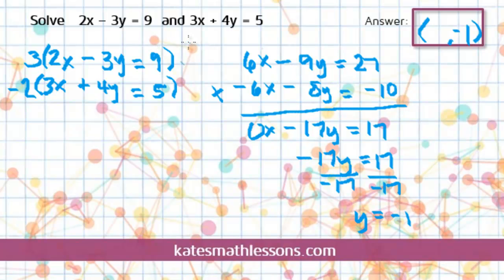When you go back to find the second variable, always go back to one of your original equations. It doesn't matter which one you pick. Pick whichever one looks easier. I'm going to pick the second one just because it has a plus sign. So I'll do it over here. So I know 3x plus 4y. And I know y is negative 1. That has to come out to 5.